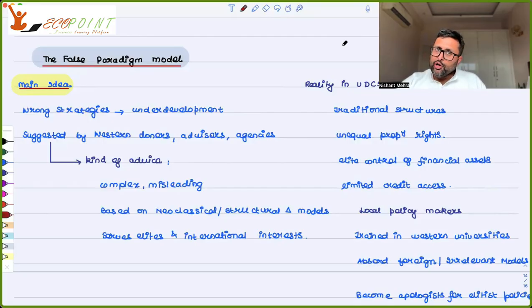Then many of these advices are based on neoclassical models, structural change models. So it is assuming that whatever happened in the developed countries would also happen in developing countries eventually. So they will also follow the same path. That is not necessarily true.